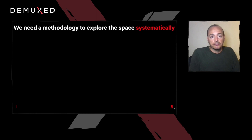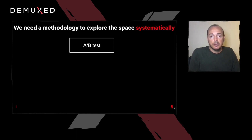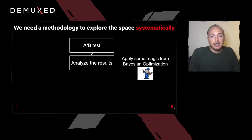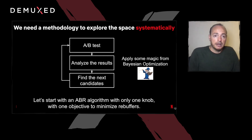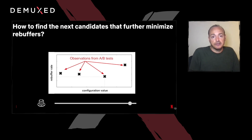Let's start with something we know well. We choose a set of configs that should provide reasonable trade-offs and we start A-B testing them. We usually use a couple of test cells to speed up the exploration. We then analyze the results and apply some magic from Bayesian optimization to find the next candidates. Then we repeat the process until we get a good modeling of the relationship between configuration values and QA. Let's go through a simple example: an ABR algorithm with one knob and one objective — to minimize rebuffer.